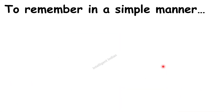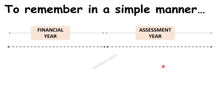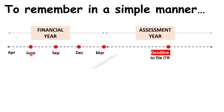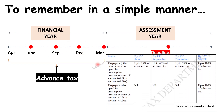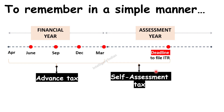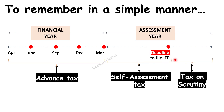Let me explain this with a simple timeline. For financial year 2021 — that is April 2020 to March 2021, assessment year 2021-22 — there are four windows for advance tax payment: 15th June, 15th September, 15th December, and 15th March, with stipulated amounts payable in each interval. Then self-assessment tax needs to be paid at or before the time of filing ITR. And lastly, tax on scrutiny: after filing the ITR, if the assessing officer finds you owe more taxes, they will send you a notice.